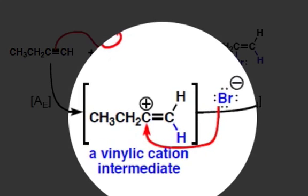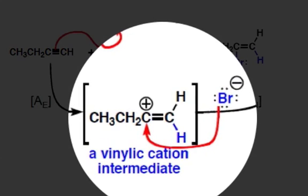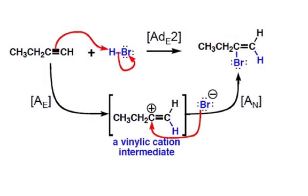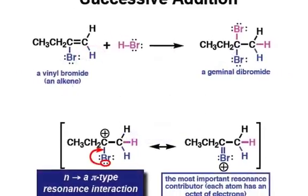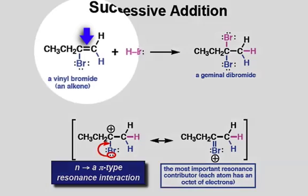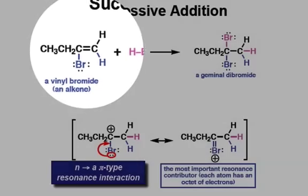Thus, addition of the bromine nucleophile will happen very quickly in an AN step. Our end product is an alkene — a vinyl bromide — and since our end product is an alkene, it should come as no surprise that subsequent addition of HBr to this vinyl bromide will occur.